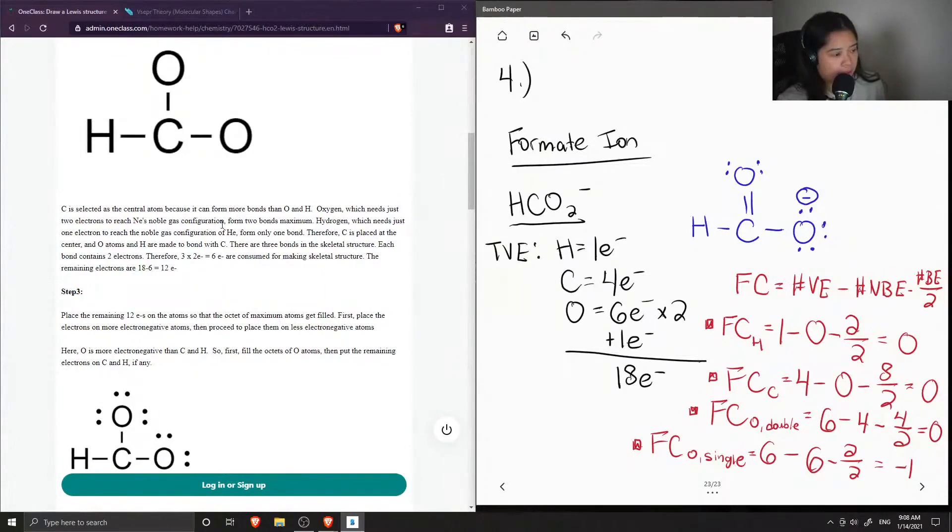You would also say that carbon can be the central atom because it can form more bonds, but also because it is less electronegative than the oxygen. So typically the least electronegative element would be the central atom with the exception of hydrogen, since hydrogen can only form one bond. So that's why carbon is most likely going to be the central atom.